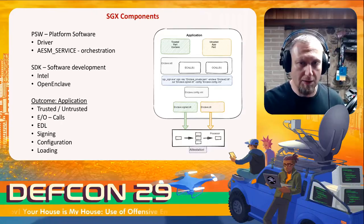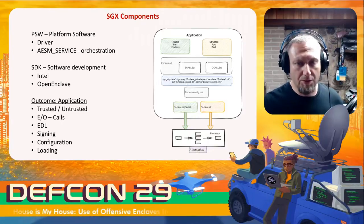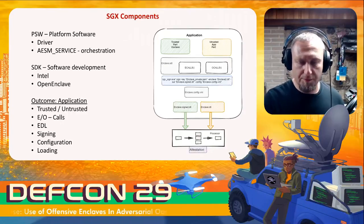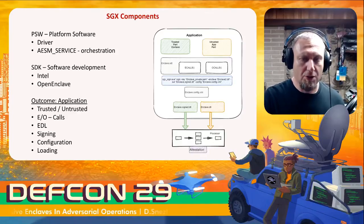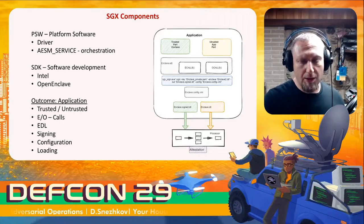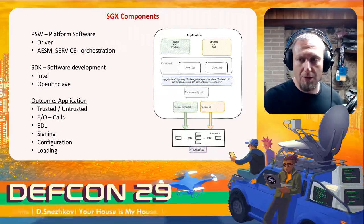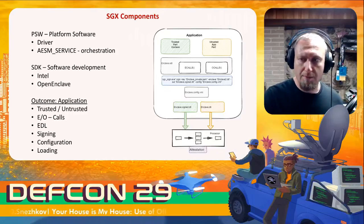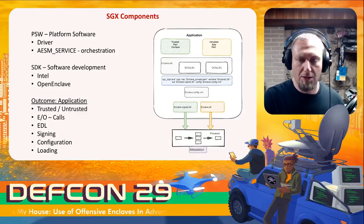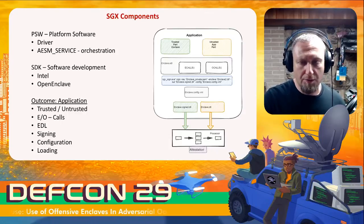There are two SDKs — we're going to look at Intel's for the most part, but Open Enclave is also available. The outcome of our efforts is an application or set of applications with trusted and untrusted parts: trusted code residing in the SGX enclave, untrusted being all the bootstrapping code that shares information with our C2 and processes payloads. We'll map calls into C2 into the trusted area and leverage SDK primitives such as configuration, signing, and loading.